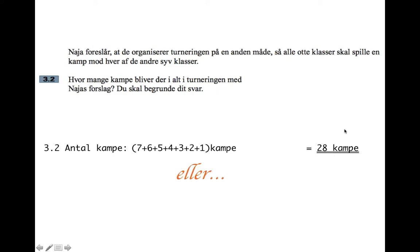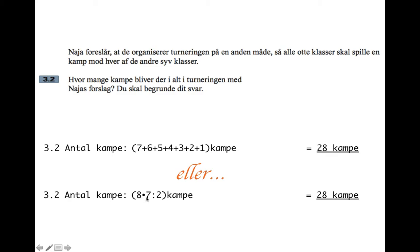There is another way you can look at this. You can say there are eight teams and they've each got to play seven other teams, so eight times seven — but if we have team A against team B, that's the same as team B against team A. So we don't want to count all those pairs twice, and for that reason we divide by two. Seven times eight divided by two is another way of getting 28.